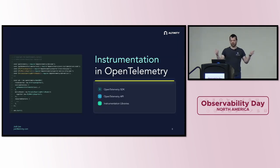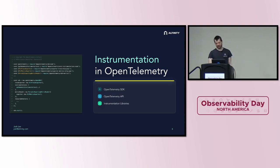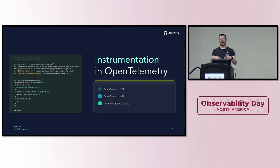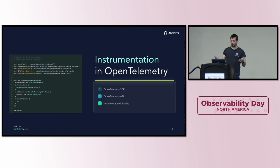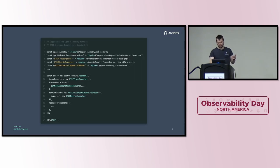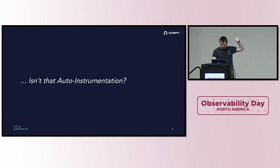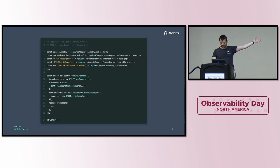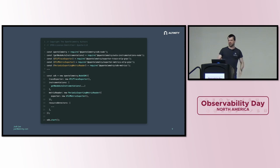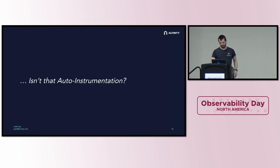So how does this work in OpenTelemetry? Here's an example from the OTel demo project, the Node.js front-end service. We have the SDK and the API — these are what we put in to start generating telemetry. On top of that, we have instrumentation libraries, and this is really where auto-instrumentation starts. Looking at that code, line 14 says 'get node auto-instrumentation.' So are we doing auto-instrumentation? Kind of — it's the first step.